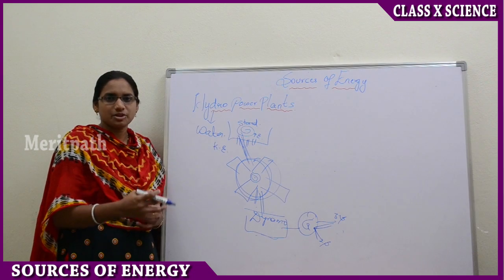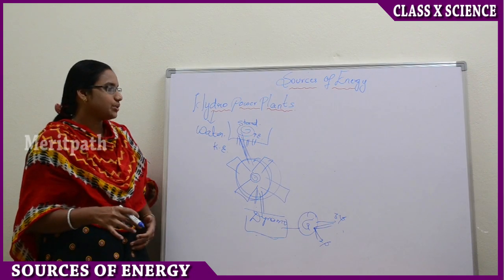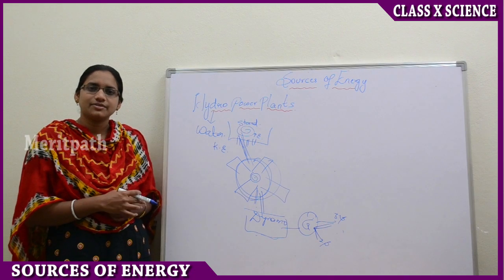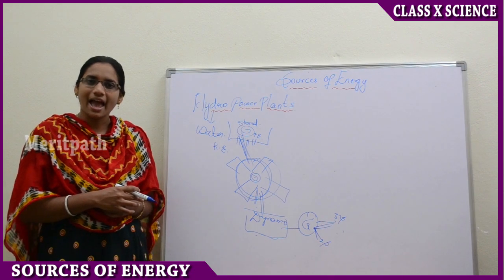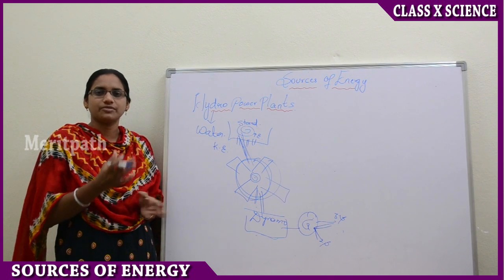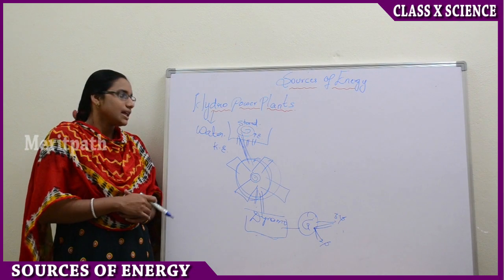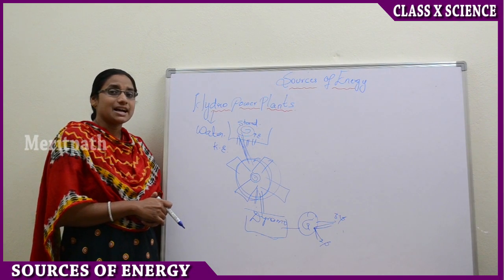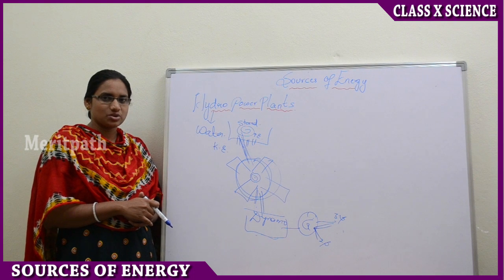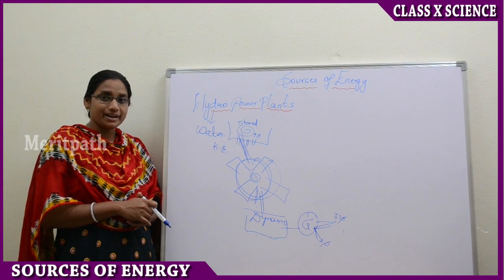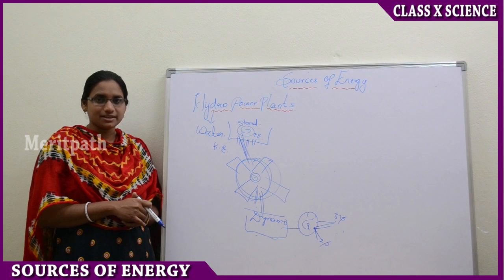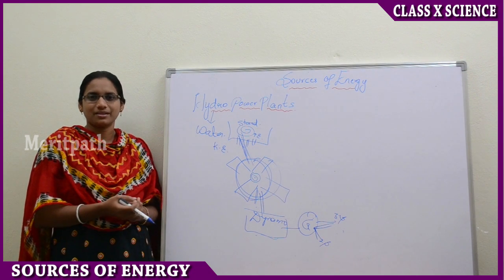This is the chain of transformation of energies. The transfer of energies will certainly have losses because of transformation from one form to another. This follows the conservation of energy principle — energy is neither created nor destroyed, but is transferred from one stage to the other, so minor losses will occur.